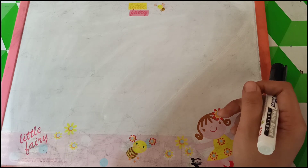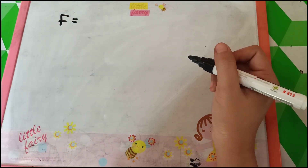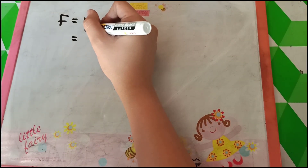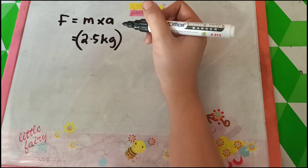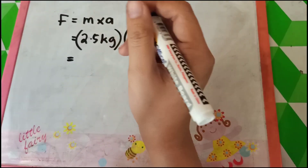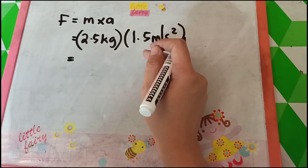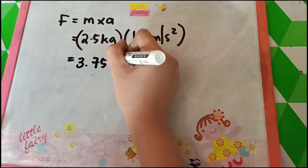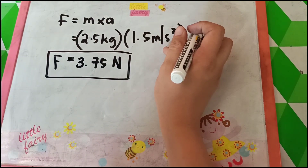Now, what are we looking for? We are looking for the force exerted on the iron bar. The formula for force is mass times acceleration. The mass of the iron bar is 2.5 kilograms, and the acceleration of the iron bar is 1.5 meters per second squared. We simply multiply 2.5 by 1.5 meters per second squared. The answer is 3.75 newtons. This is the force needed for the iron bar to be accelerated.